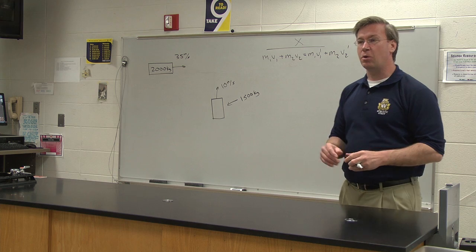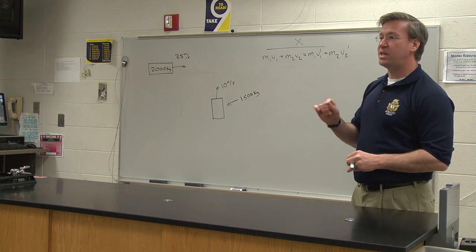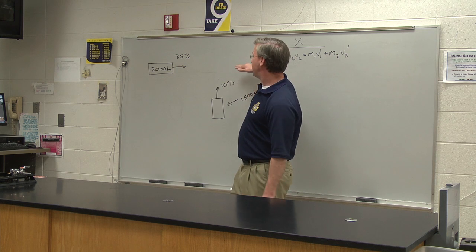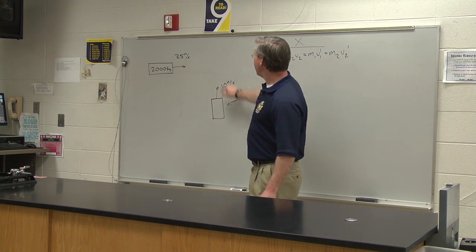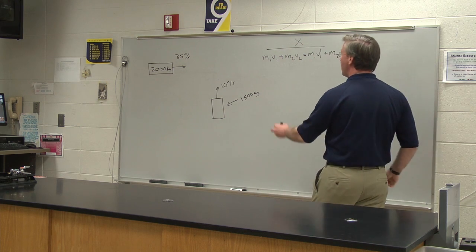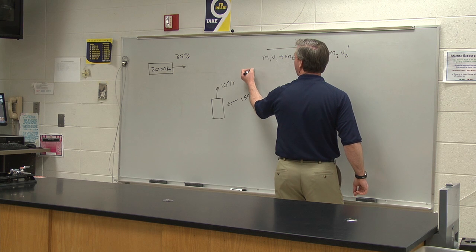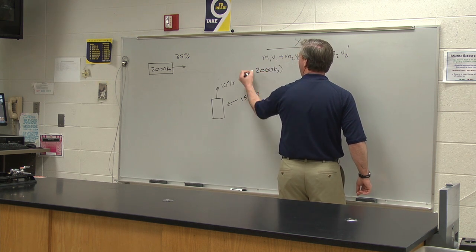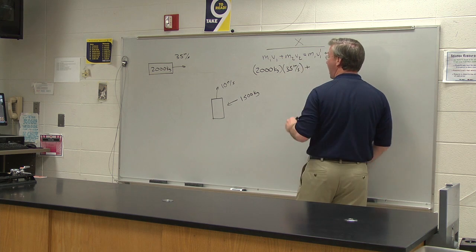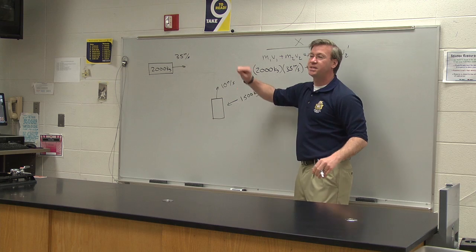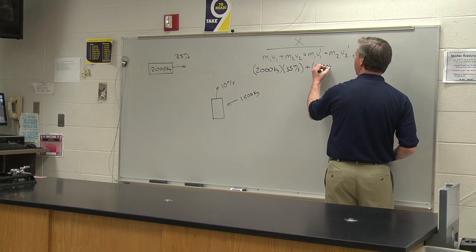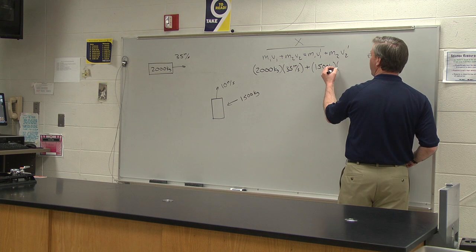If we look at only things that move in the x-direction, there's only one: this first car. The second car is moving, but it's moving in the y-dimension, not the x-dimension. So I'll put in: 2,000 kilograms multiplied by 35 meters per second, plus 1,500 kilograms — included because it's part of the problem — but it has no velocity in the x-dimension.